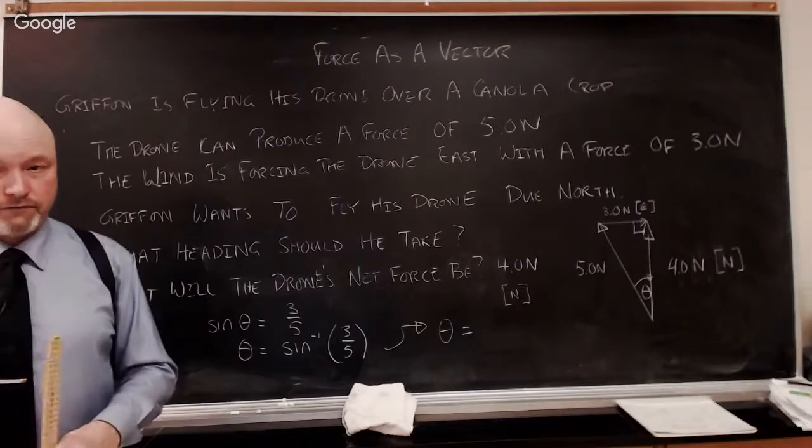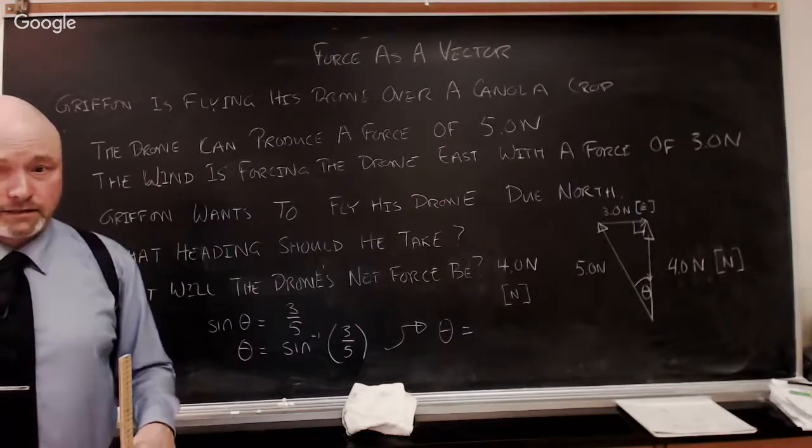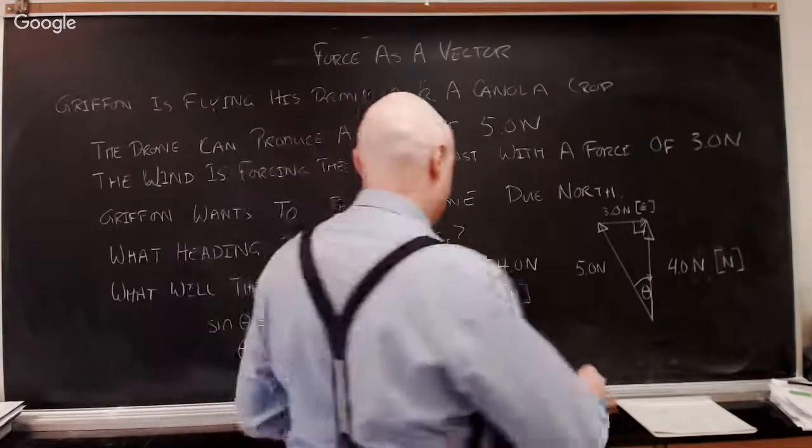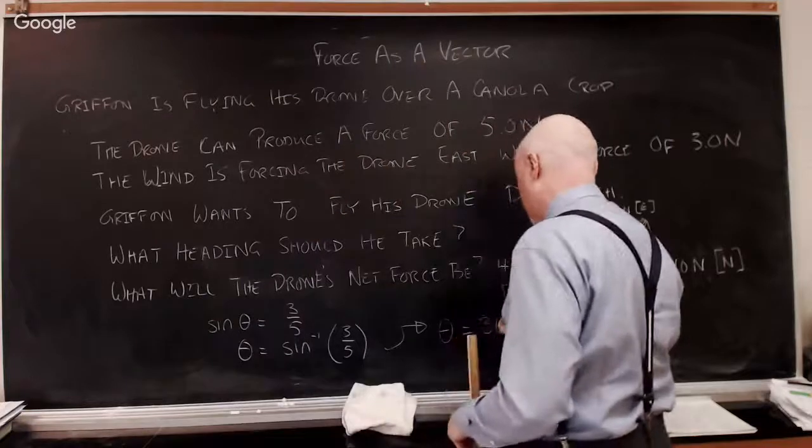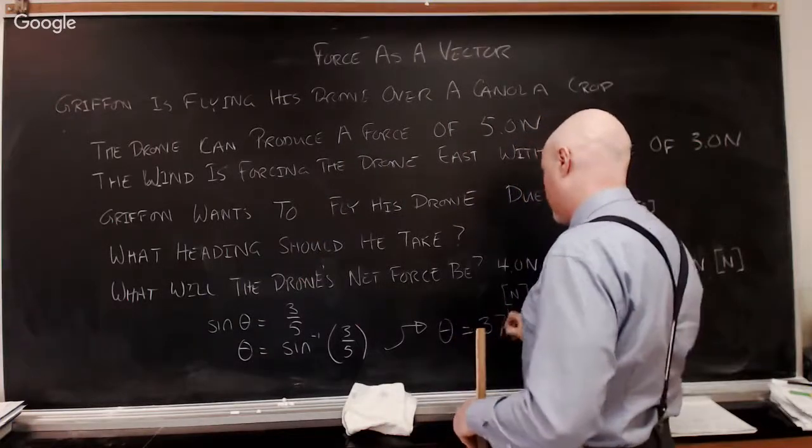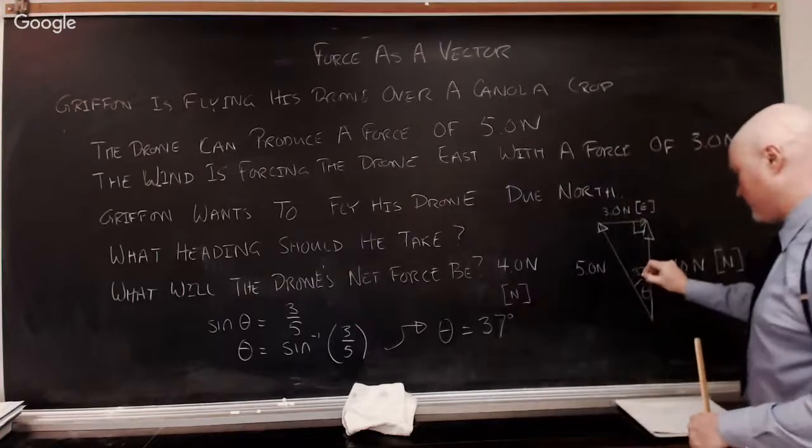And the arc sine of 3 over 5 is 36.8, so let's say it's 37 degrees. Good enough. Good enough for canola.